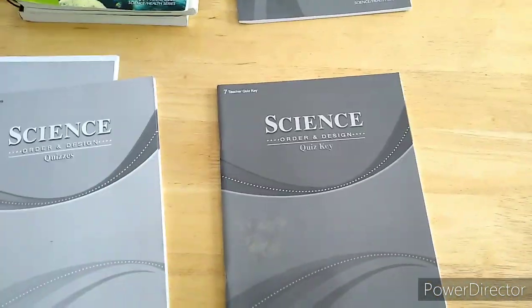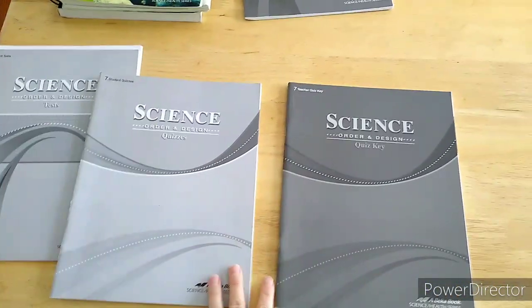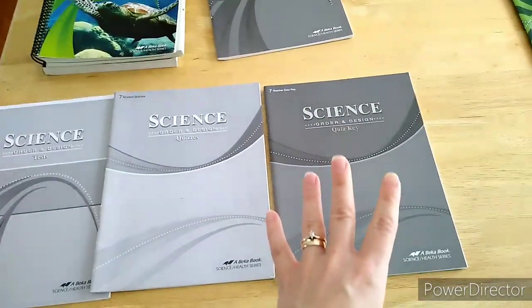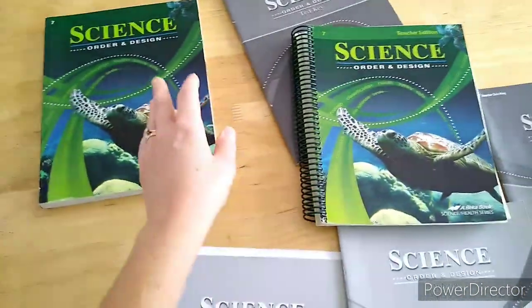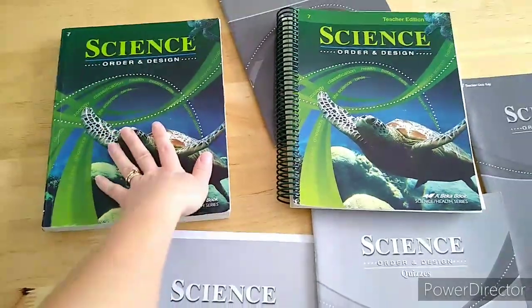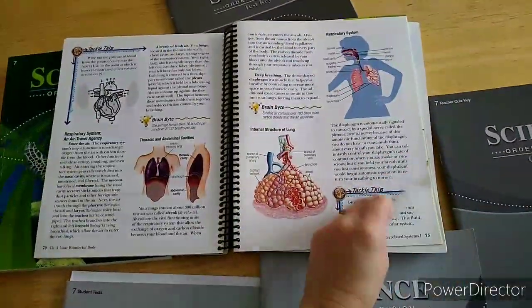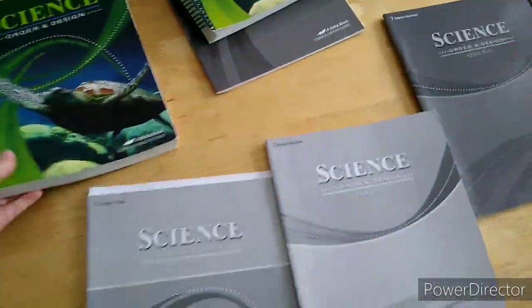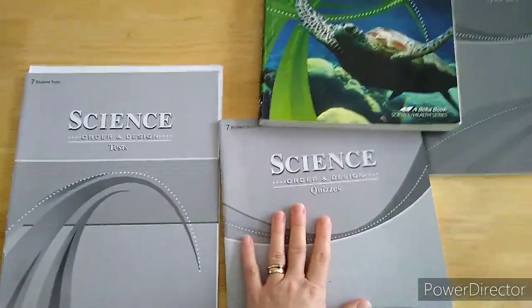Before I move on to the activity book, I do want to say that if you're wanting to save money or needing to save money and you don't want to buy the entire set like this, I'll tell you what we did. I already told you that you could not buy the student text and just go through the student text in the teacher's book with your student. That's one way to where you wouldn't have to buy this book.